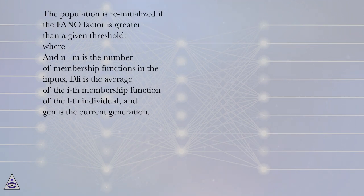Where M* is the number of membership functions in the inputs, μLE is the average of the I-th membership function of the L-th individual, and GEN is the current generation.